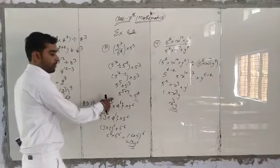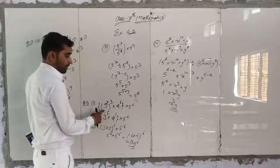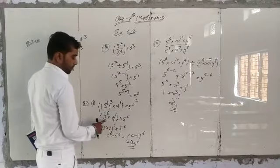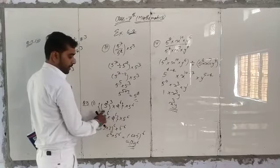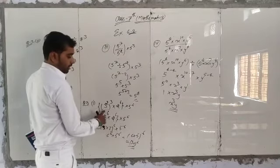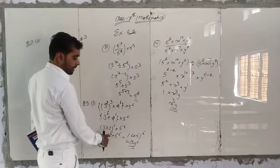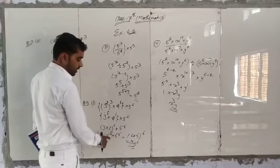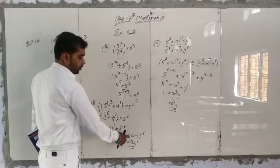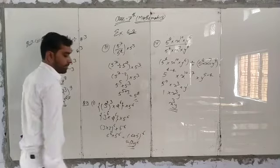So 3 to power 2, whole power 3 means 2 into 3 is 6, giving 3 to power 6 into 2 to power 6 into 5 to power 6. Base same is not the case, but power same is. So 3 into 2 is 6, and 6 into 5 is 30, so 30 to power 6 is the answer.